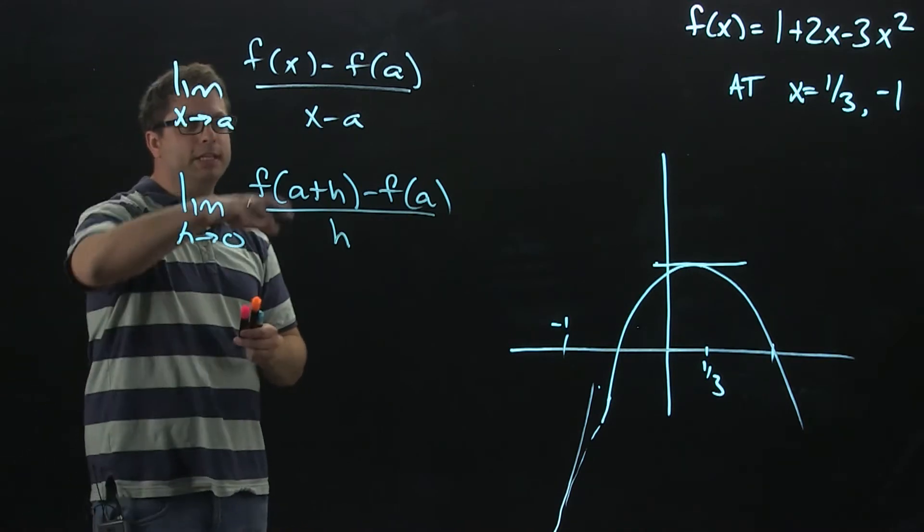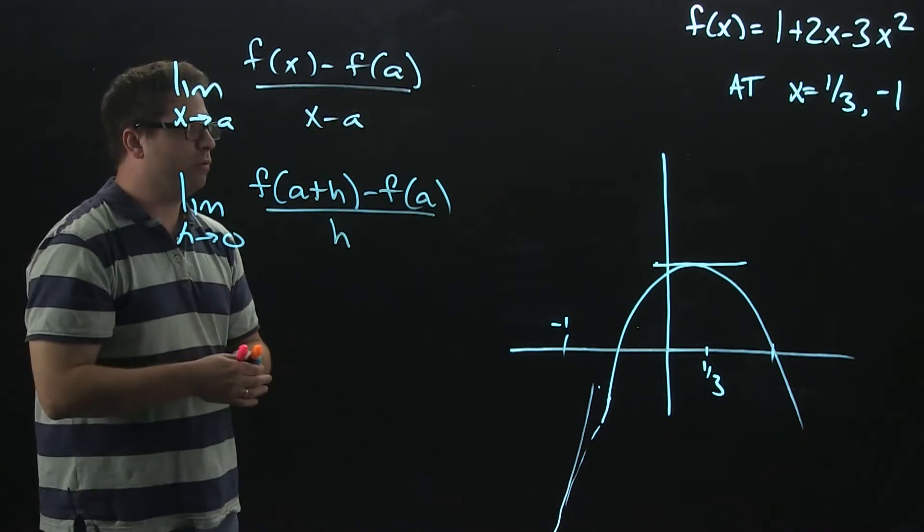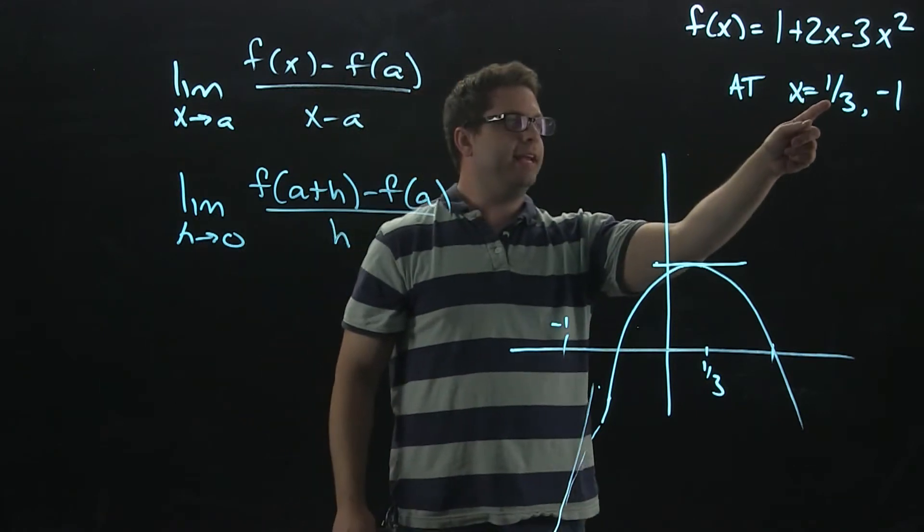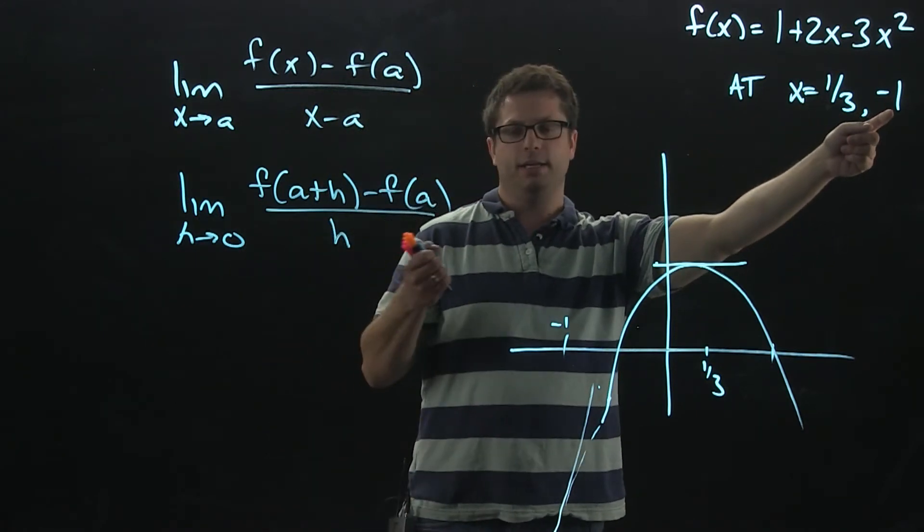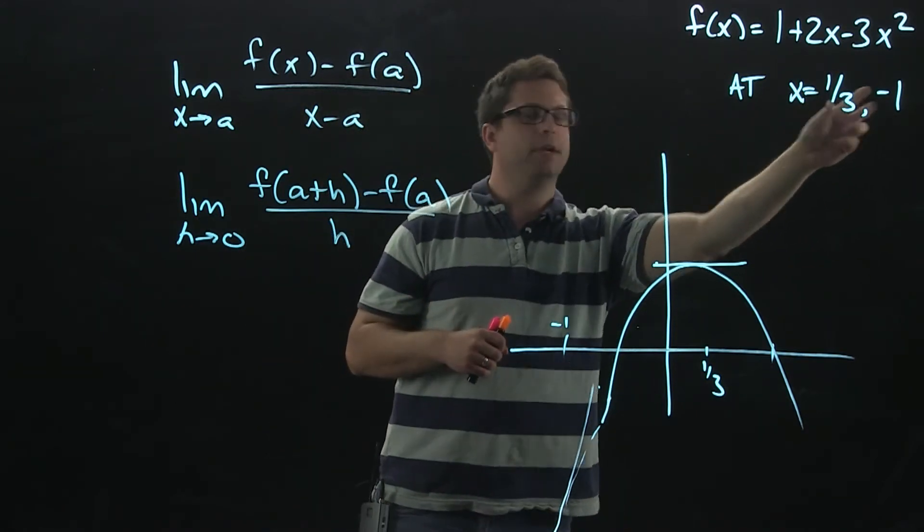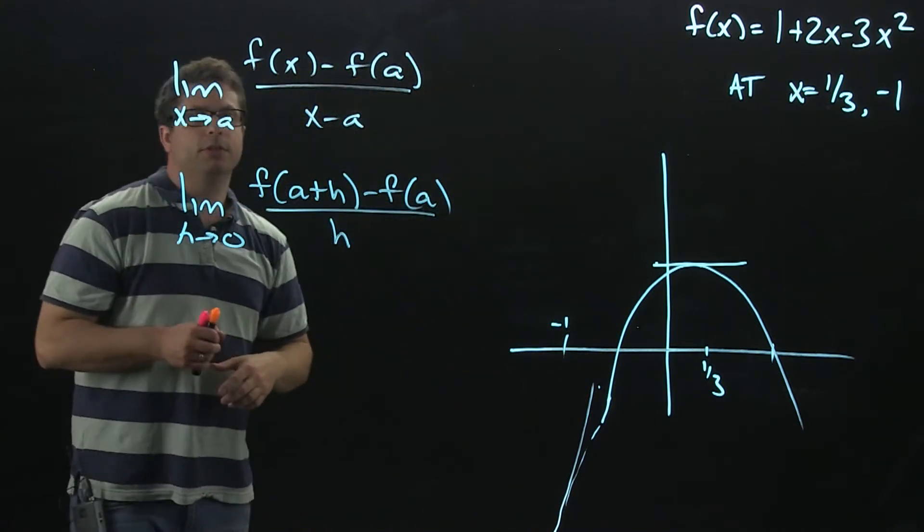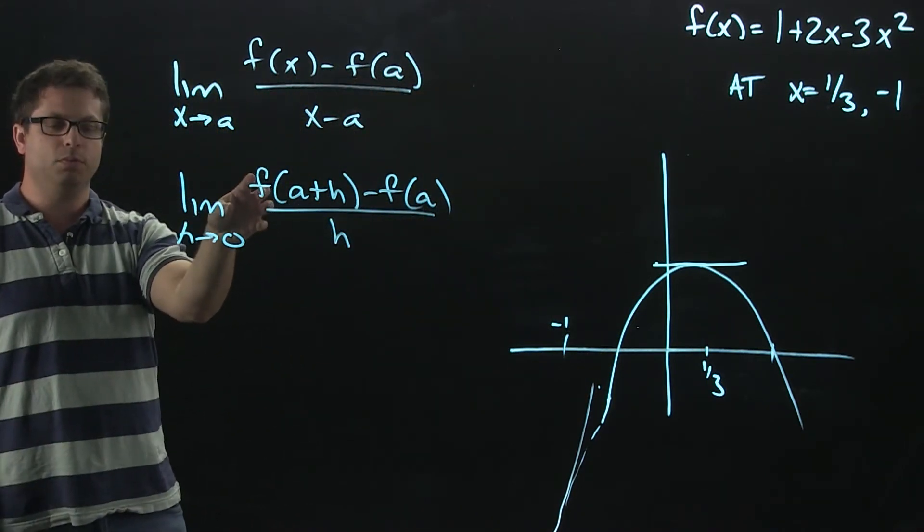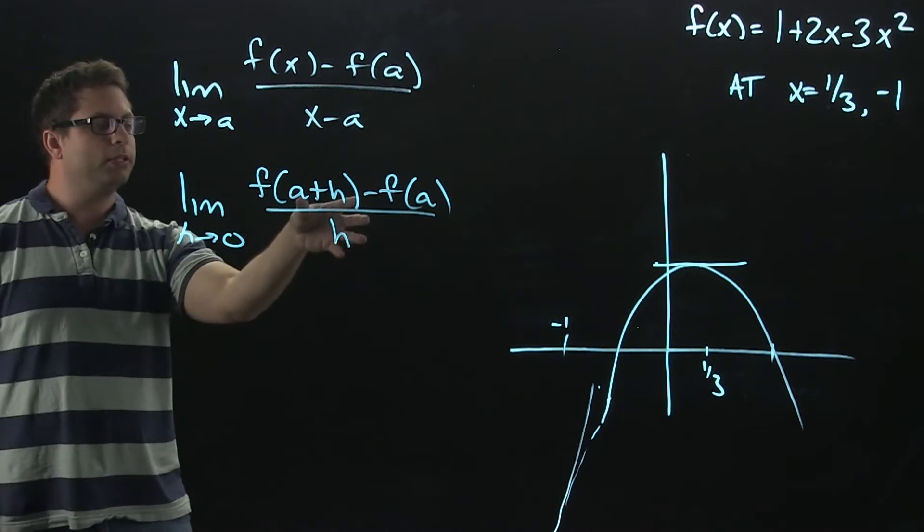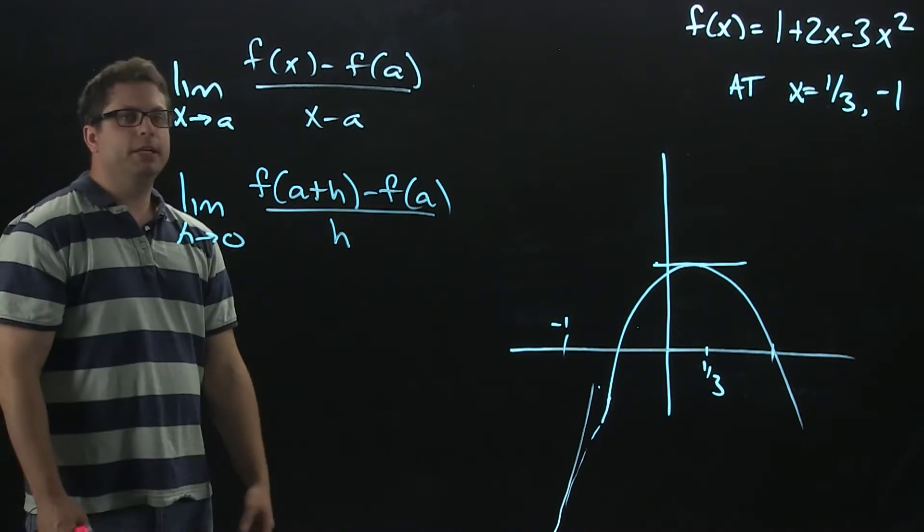Now in both of these, the a is the specific x value we're talking about. A could be 1/3, or then a could be the negative 1, depending on which one I want. The two versions I have here, I am going to do it with this one. This one works a little better when you have polynomials, but it is up to you.